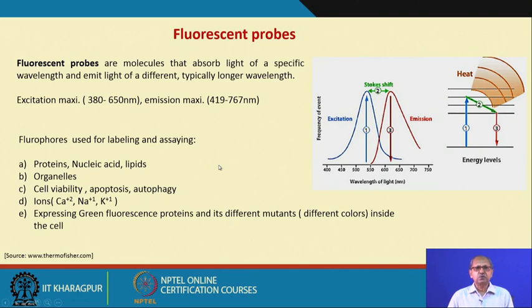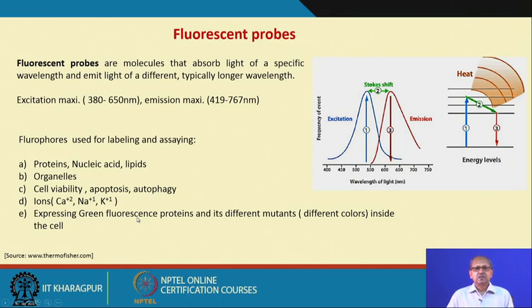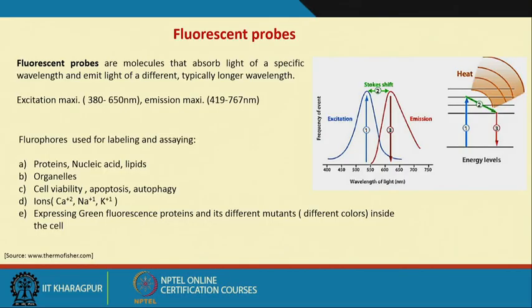Fluorophores are used for labeling and assaying proteins, nucleic acids, lipids, and organelles such as mitochondria, lysosomes, nucleus, and membranes. We can assay cell viability, apoptosis, autophagy, and for signaling purposes — such as calcium quantification or calcium ion transport. Green fluorescent proteins and their mutants are also expressed inside cells, and different types of fluorescent probes are being developed to target specific organelles, specific molecular events, and specific biological events, either in live cell imaging or in fixed cell imaging.